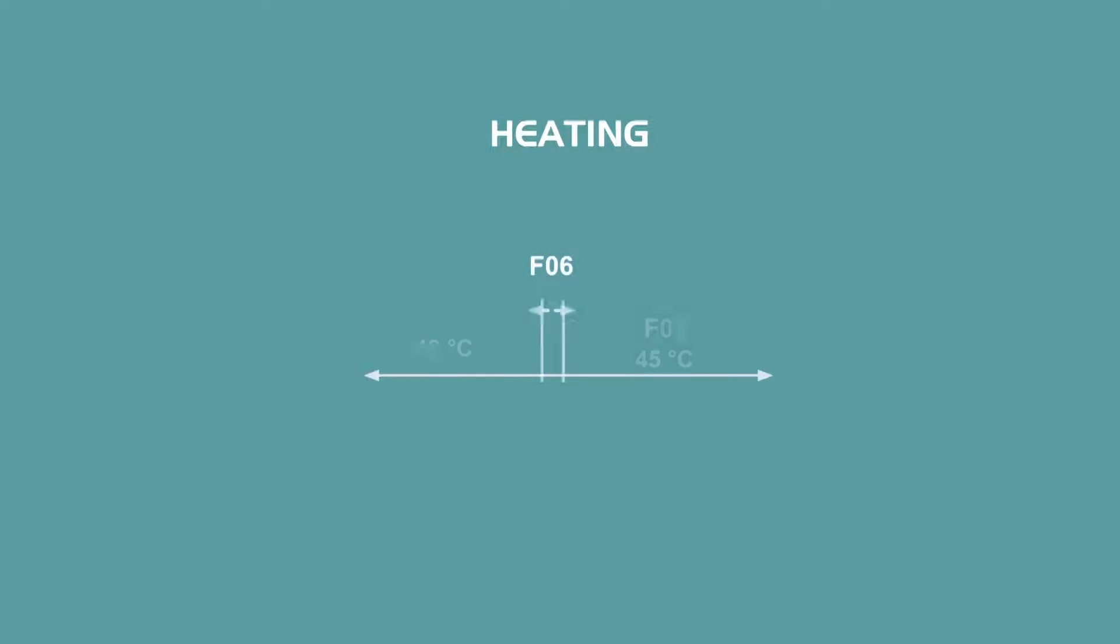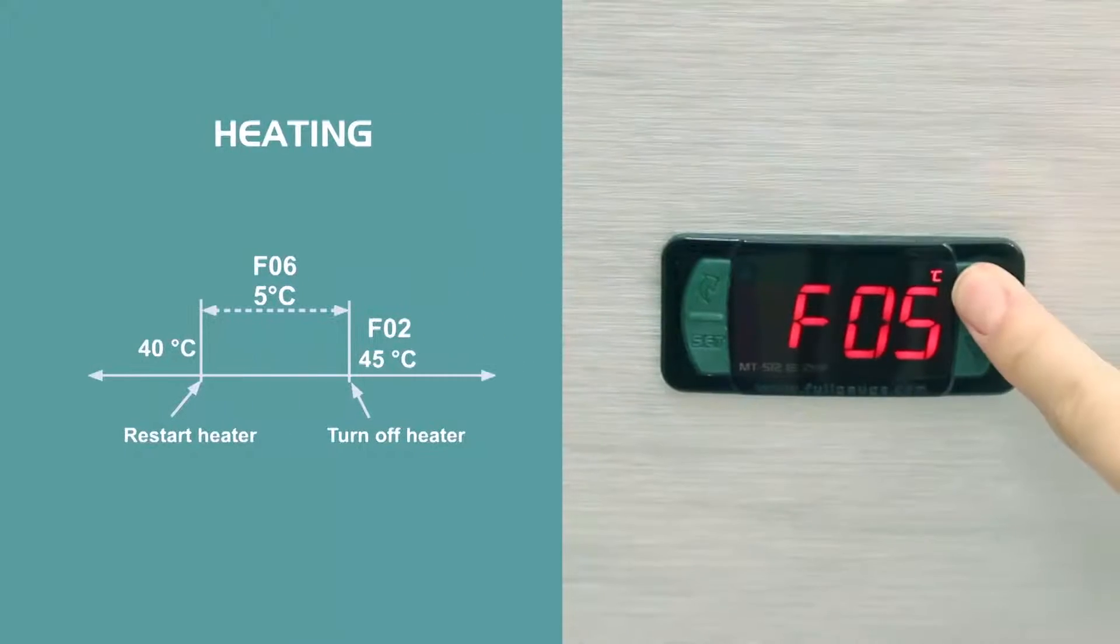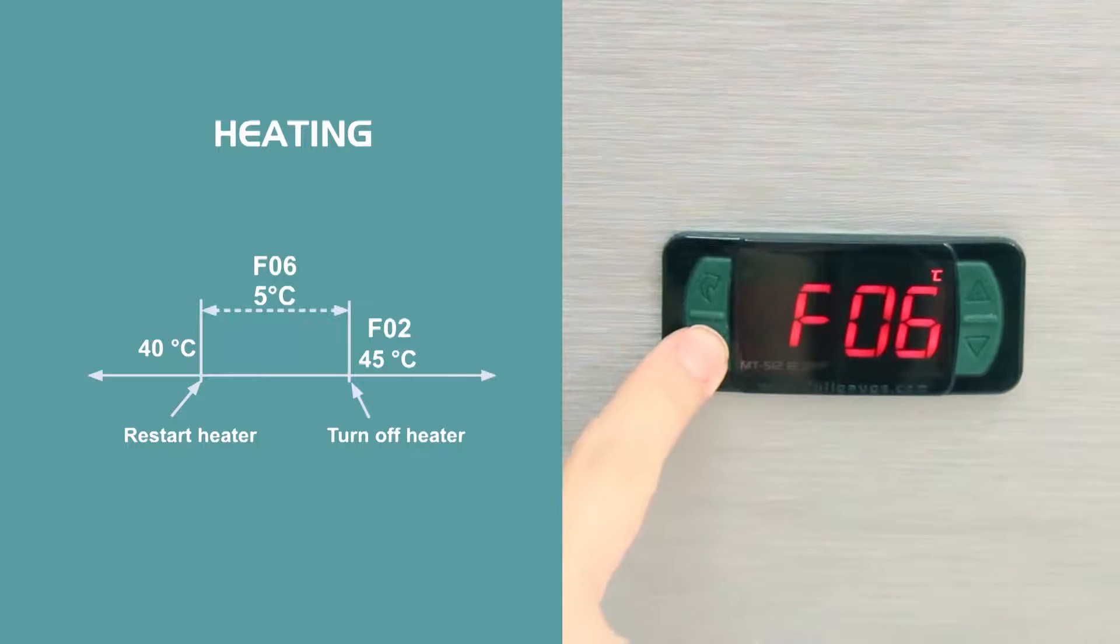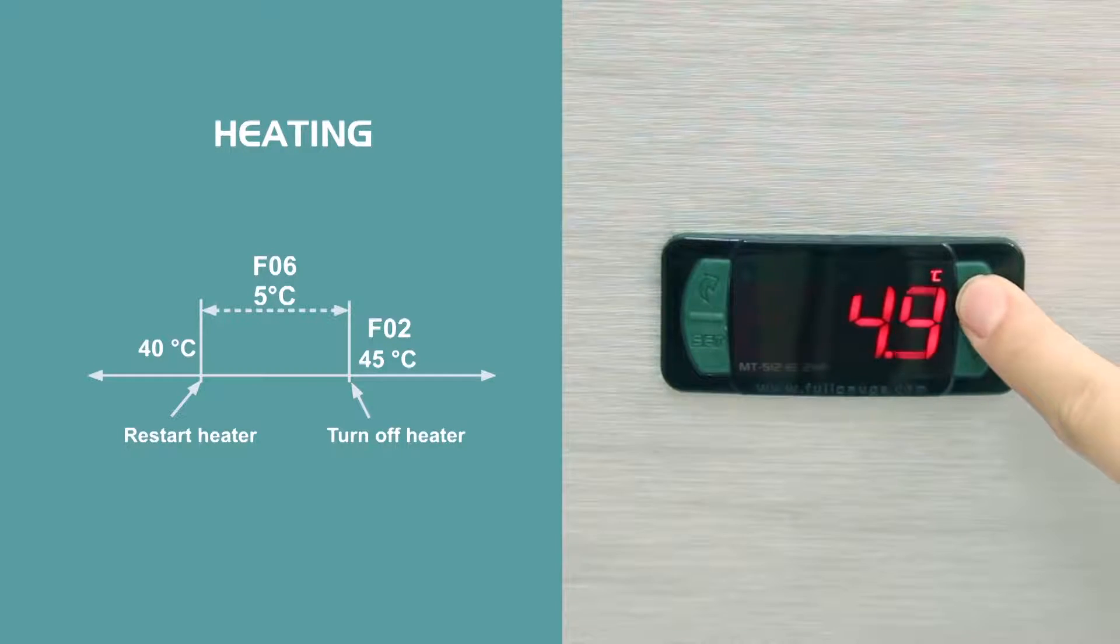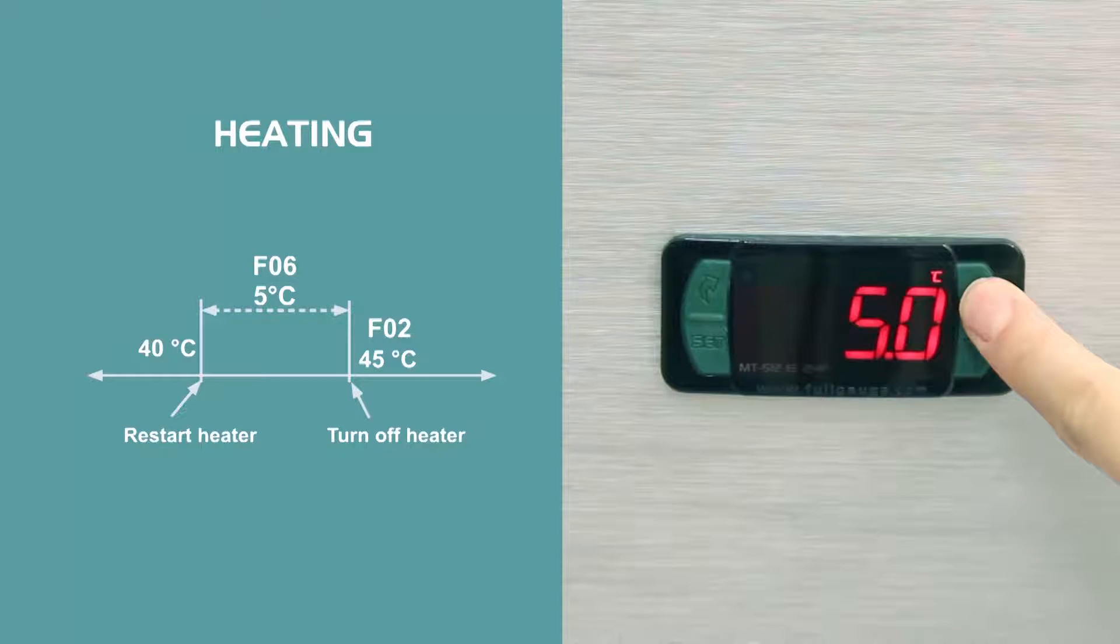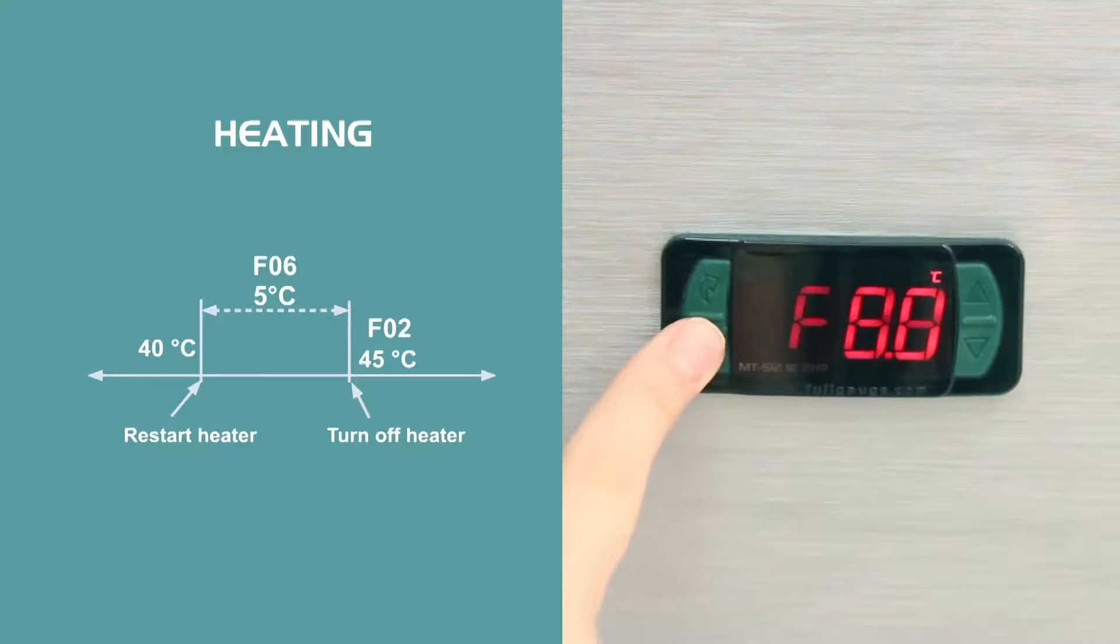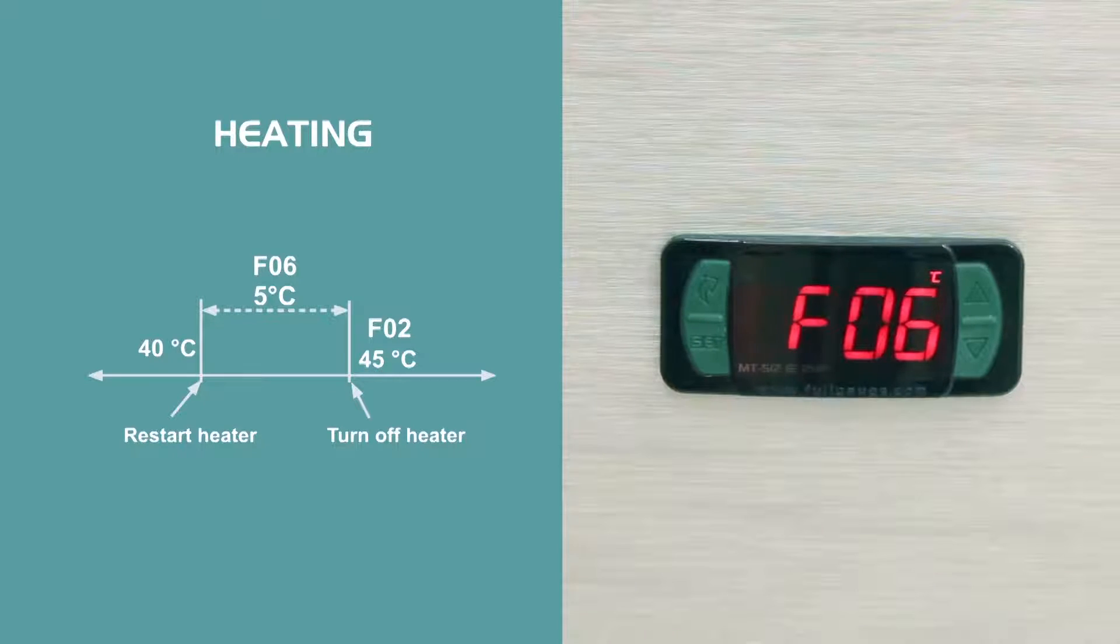In the heating example, with a set point of 45 degrees Celsius and the hysteresis adjusted at 5 degrees Celsius, the controller shuts down the heater at 45 degrees Celsius and reconnects it at 40 degrees Celsius. Note, a very low hysteresis results in high frequency in the controller relay activation and deactivation cycles, which can shorten the life of the components.